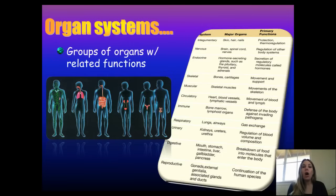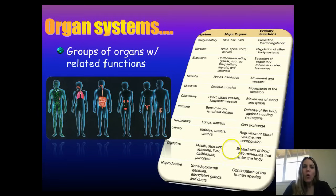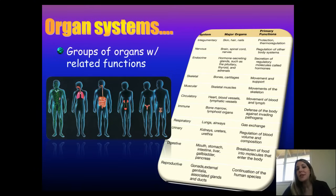Let's talk about all the main organ systems of the body. Organ systems are groups of organs with related functions that work together for a common purpose. In this first half of the series, we're going to tackle some of those organ systems. One lecture will deal with the integumentary system — your skin, hair, and nails — which protects you and helps regulate temperature.